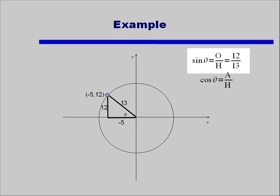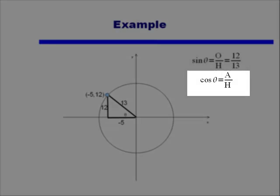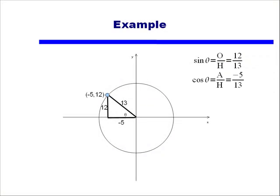Now we can go ahead and find our sine. The sine of theta is opposite over hypotenuse, or 12 over 13. Cosine of theta is equal to the adjacent side, divided by the hypotenuse. And we see that the adjacent side is equal to negative 5, and the hypotenuse again is 13. So our answer is negative 5 divided by 13.